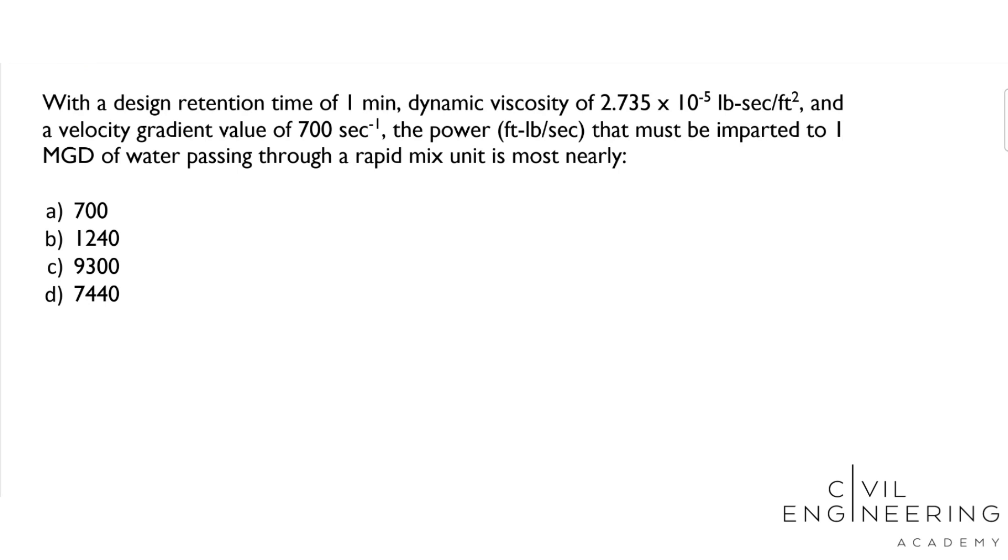The problem statement says, with a design retention time of 1 minute, dynamic viscosity of 2.735 times 10 to the negative 5 pounds seconds per feet cubed, and a velocity gradient value of 700 seconds to the negative 1, the power in foot pounds per second that must be imparted to 1 million gallons per day of water passing through a rapid mix unit is most nearly what? We were given a lot of numbers and variables, what do these all mean?